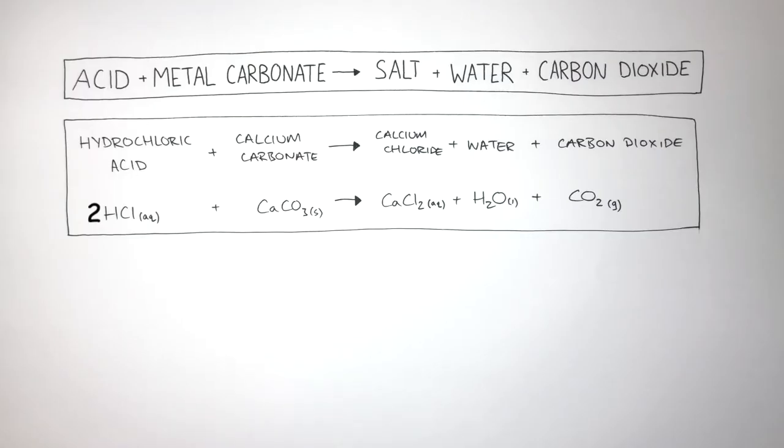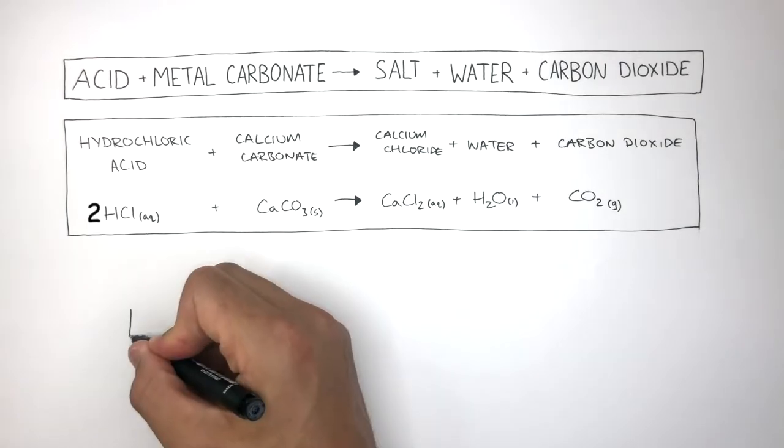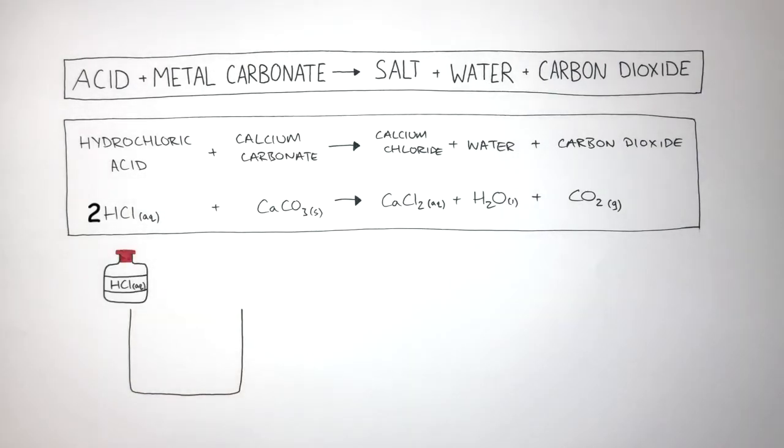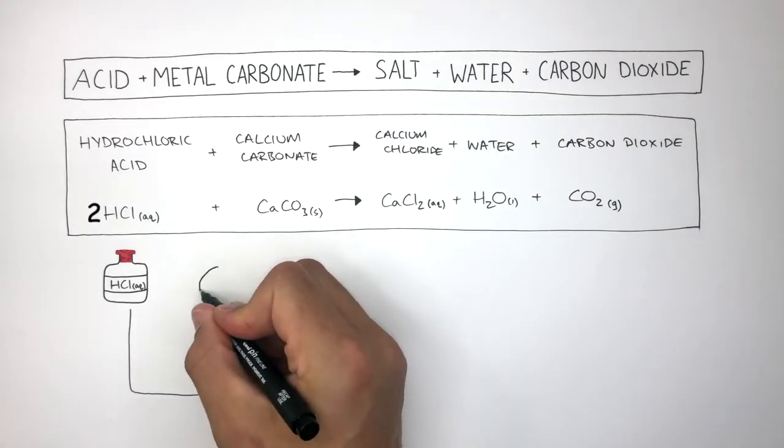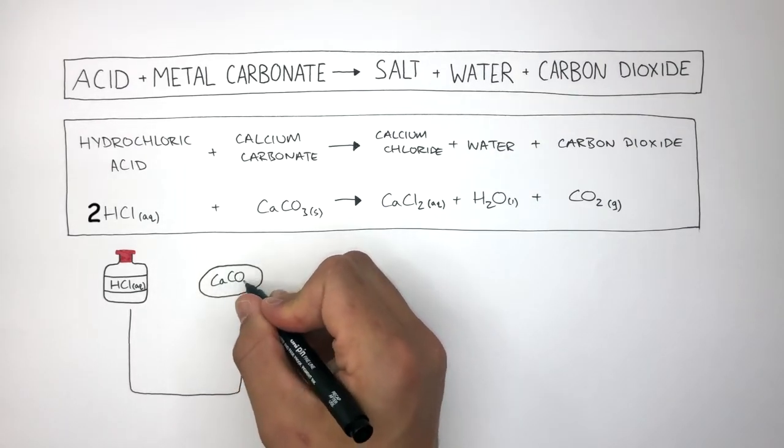Let's now focus on understanding what happens in this chemical reaction. So here we have a beaker, a solution of hydrochloric acid, and a solid lump of calcium carbonate.